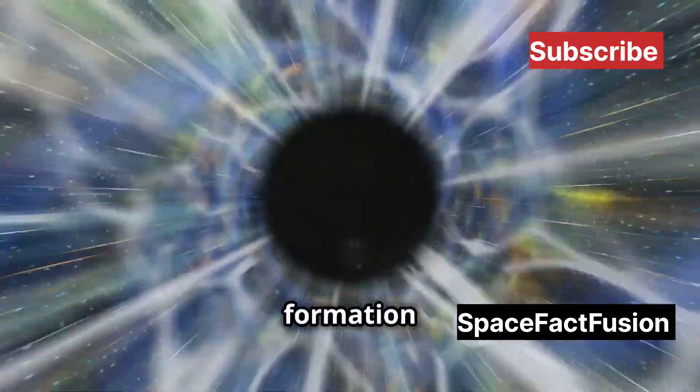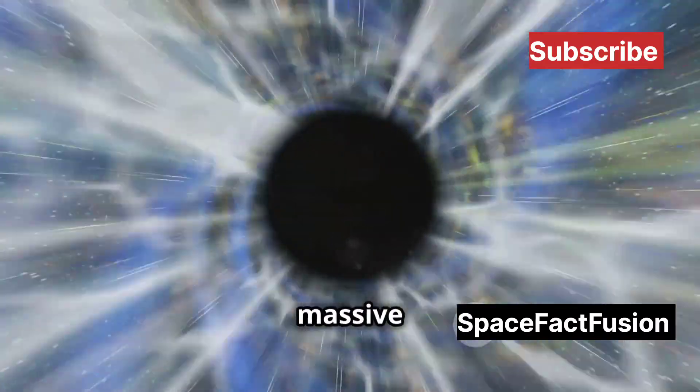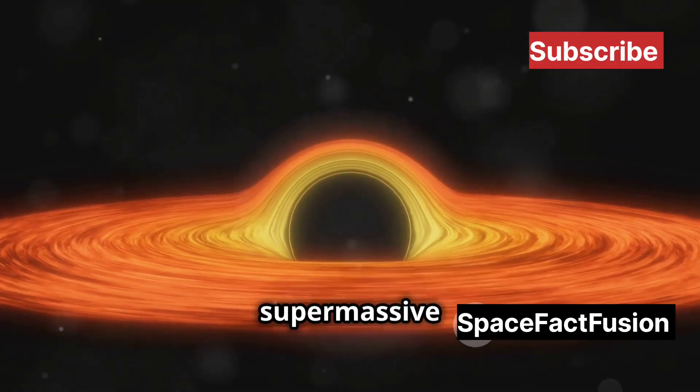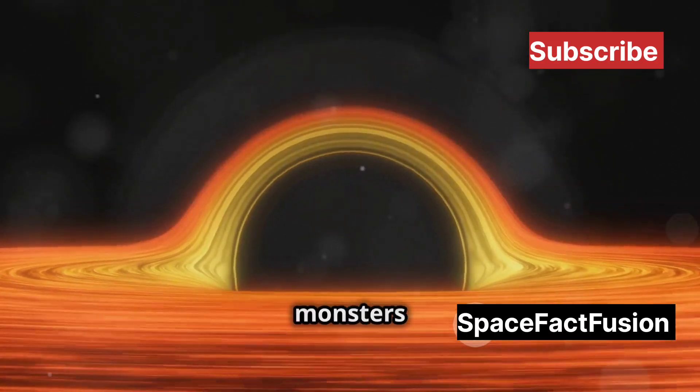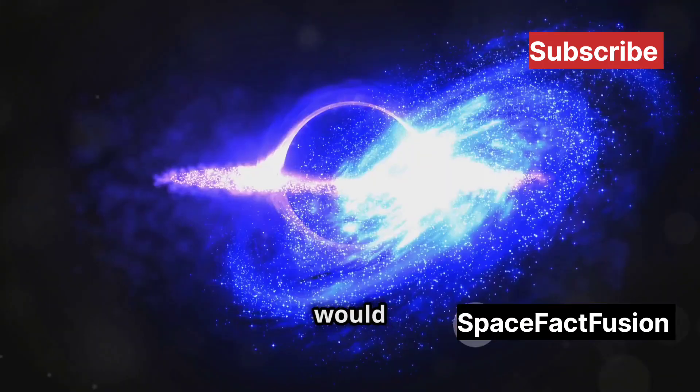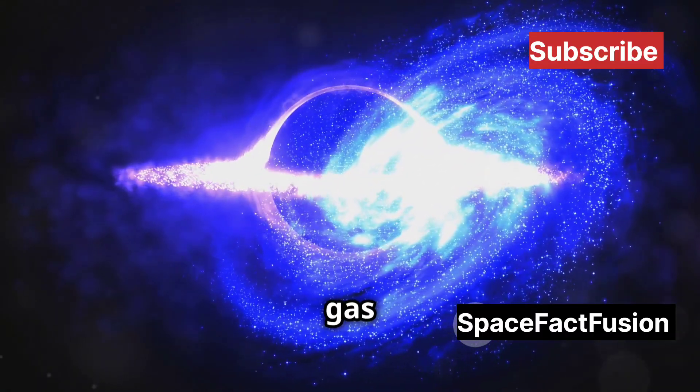This process is different from the formation of smaller black holes, which typically result from the death of massive stars. This process could have created the seeds of supermassive black holes, seeds that would grow into the cosmic monsters we observe today. Over billions of years, these seeds would accrete more matter, merging with other black holes and absorbing gas and stars.